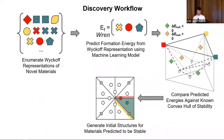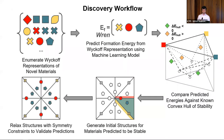A follow-up on the Wyckoff representation slide clarified that yellow crosses lie along one symmetry line, red circles along another symmetry line, and atoms can also lie on symmetry planes. Moving an atom outside its assigned Wyckoff region would break the crystal symmetry and correspond to a different structure.